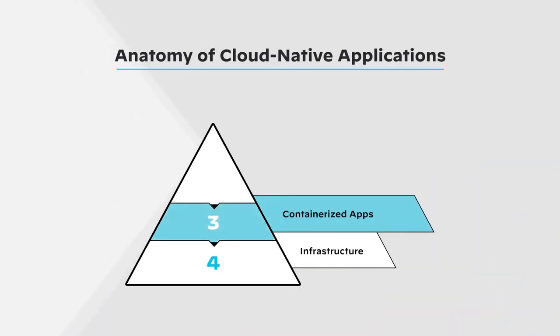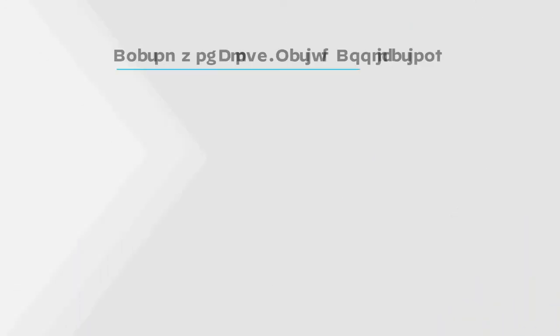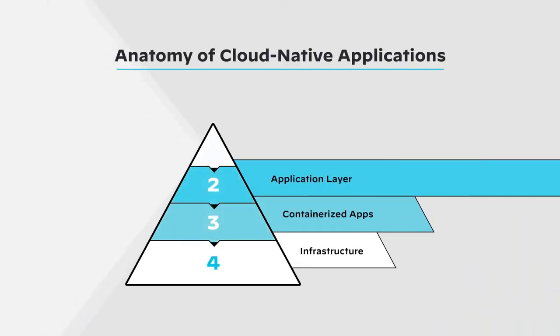On top of your infrastructure, you have your containerized applications, which are distributed across virtual machines, hosts, containers, Kubernetes, and serverless architectures. Cloud workload protection platforms help identify vulnerabilities at runtime as well as during deployment, to prevent sourcing malicious or vulnerable images from registries. Next, you'll find the application layer, which is made up of open source and custom code that defines how the application functions. SCA is used to identify vulnerabilities in open source dependencies, while static application security testing and dynamic application security testing — also known as SAST and DAST — are used to secure custom code.